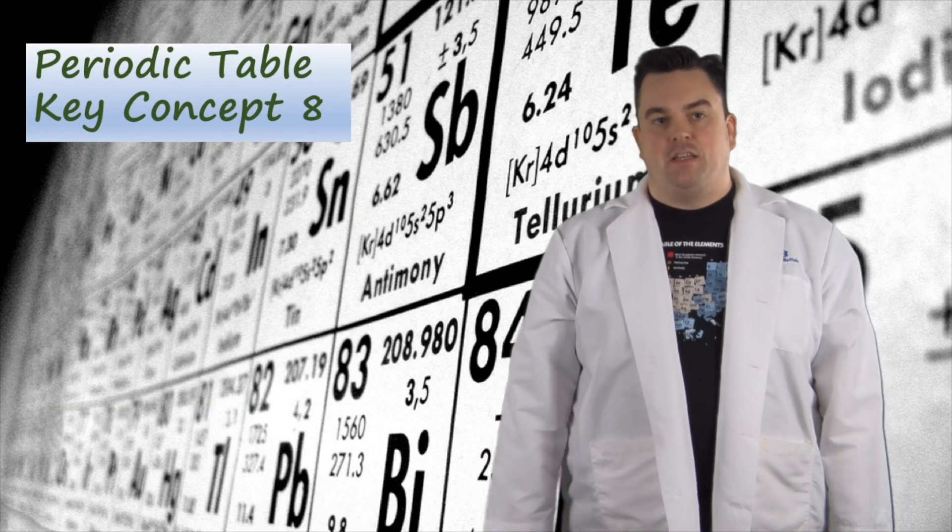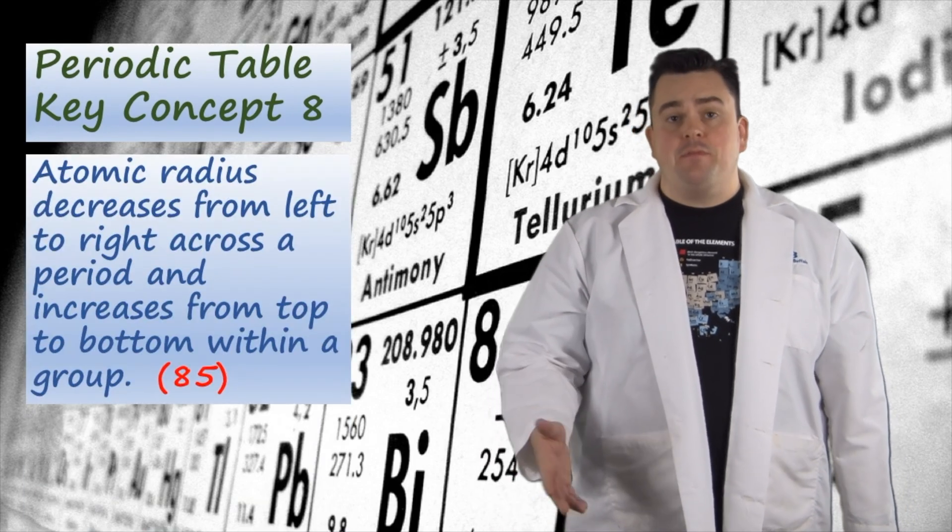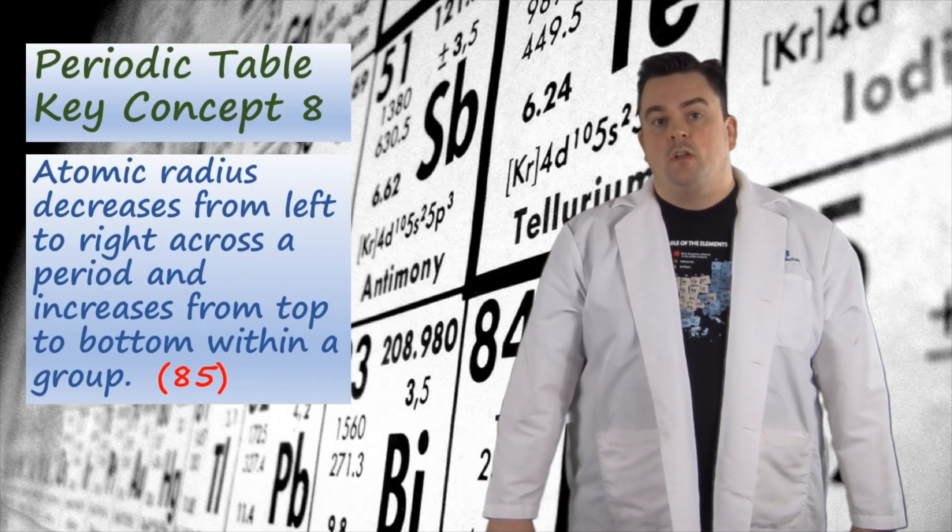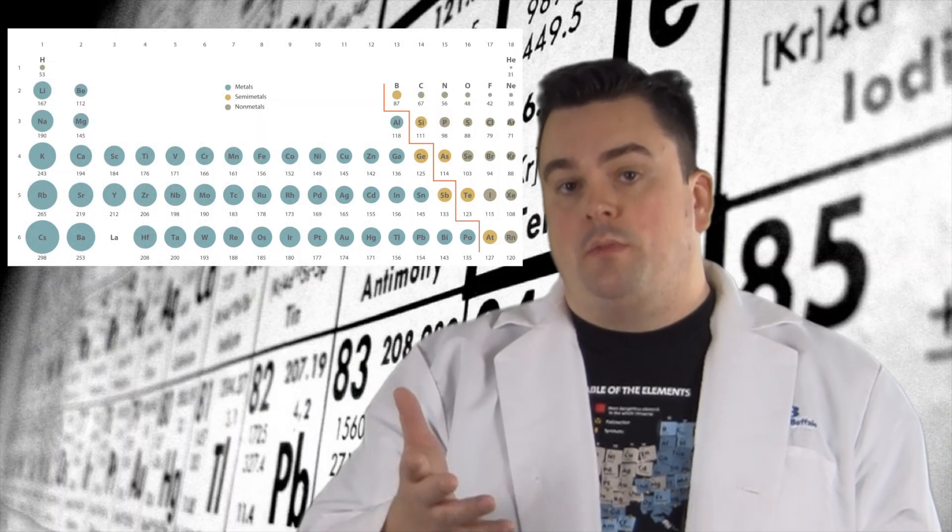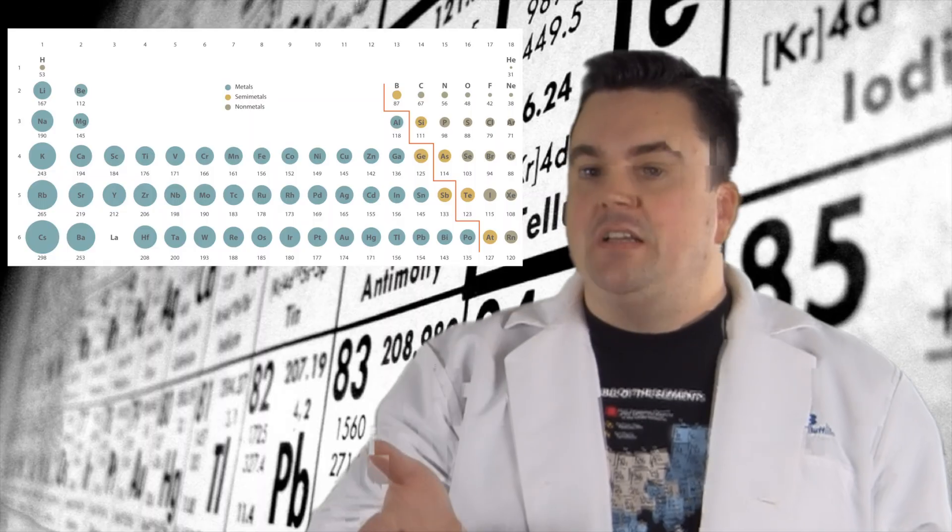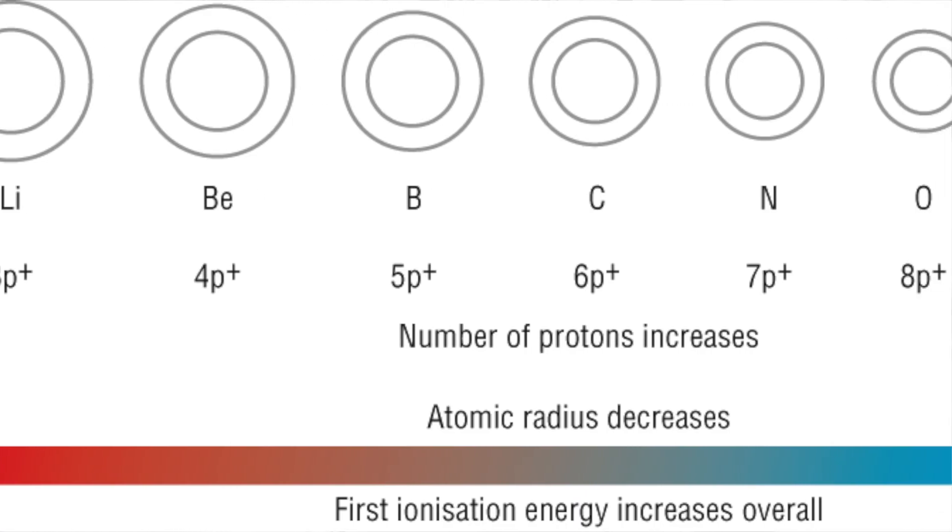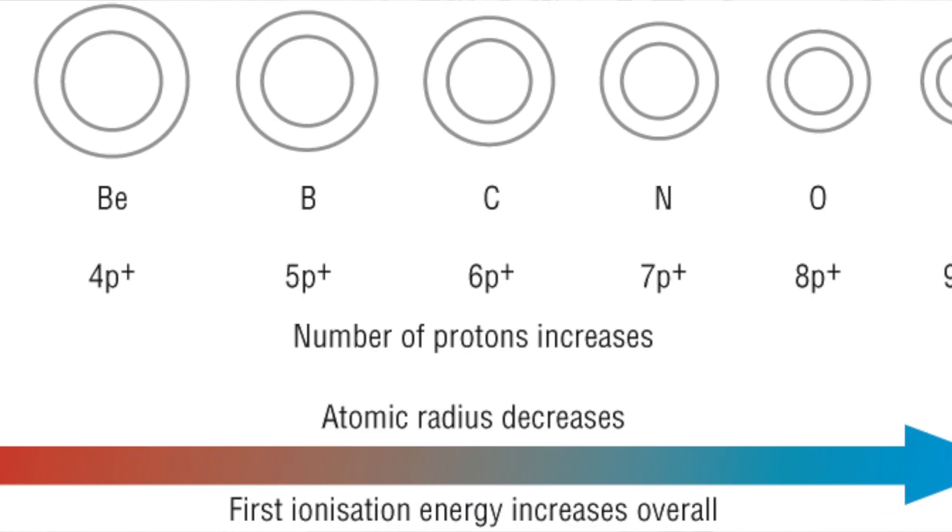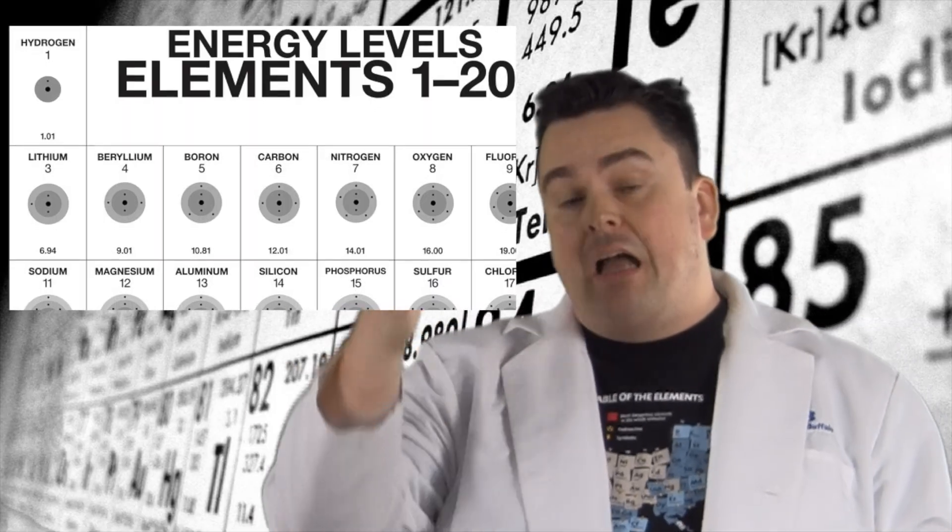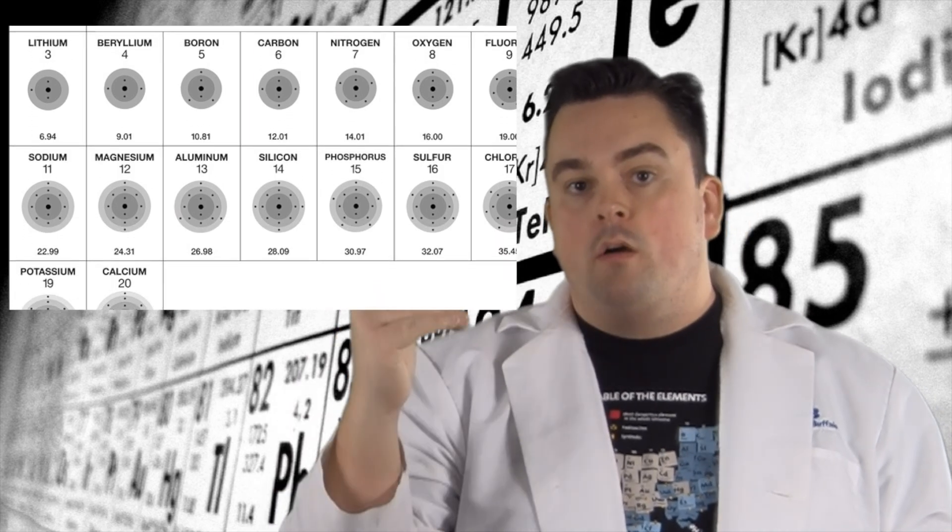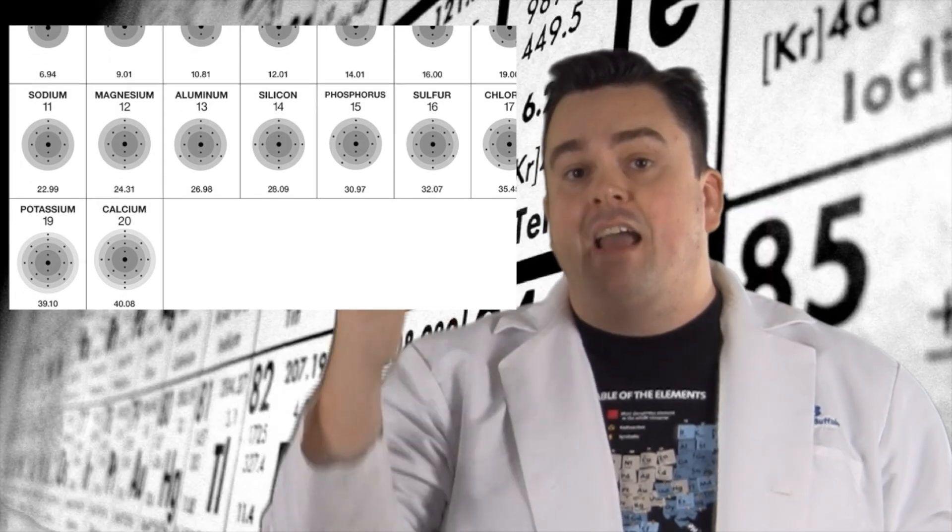Periodic Table Key Concept 8. Atomic radius decreases from left to right across a period and increases from top to bottom within a group. Now when you think about atomic radius going from left to right across a period, we are not filling in any additional shells. We are simply adding one more proton to each successive element within that period, increasing its nuclear charge. The effect that has is it pulls those electrons in with a greater nuclear charge, hence a smaller radius. Now up and down in a group, it's easier to see the trend because we gain one more principal energy level electron shell as we go down that group.